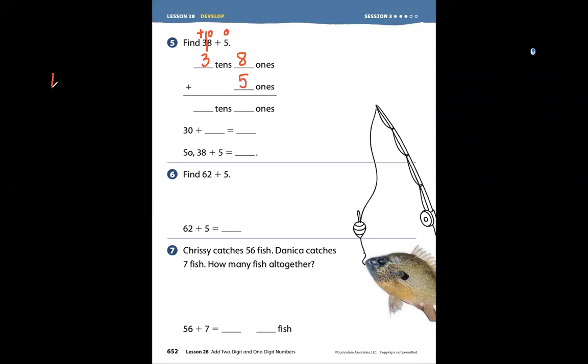Step 1, add tens. So we're adding 3 tens. We don't have any more. That's it. 3 tens.